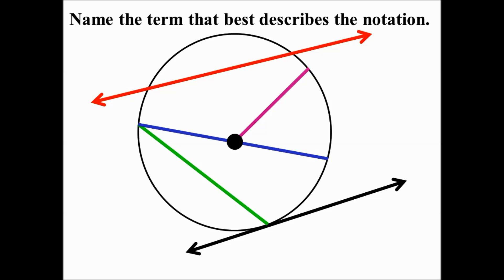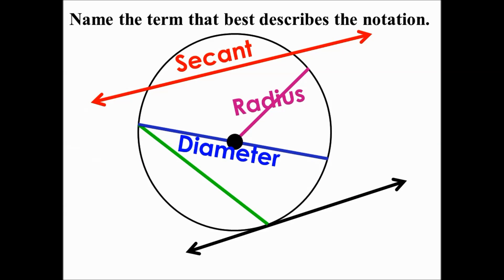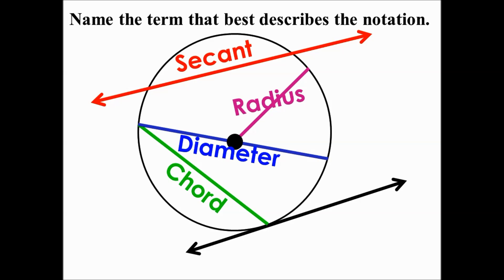Name the term that best describes each notation. The red line is a secant line. The purple line segment is a radius. The blue line segment is a diameter, which is a type of chord. The green line segment is just a chord. Finally, the black line is a tangent line.